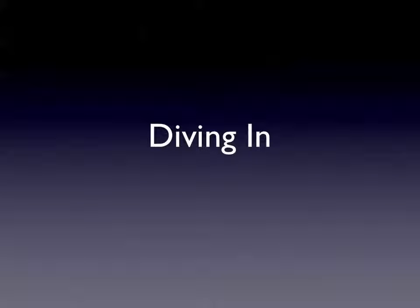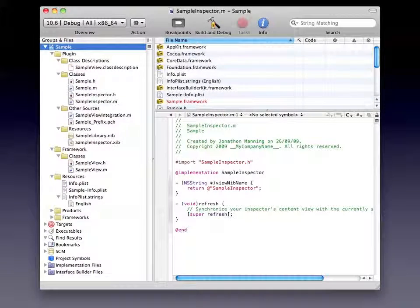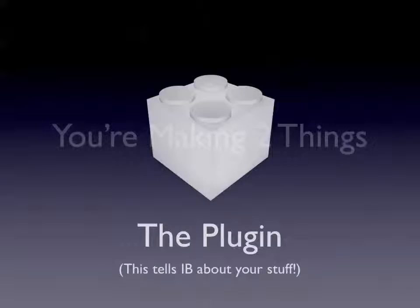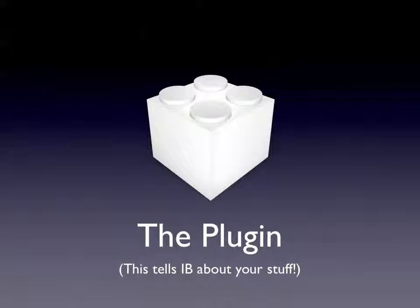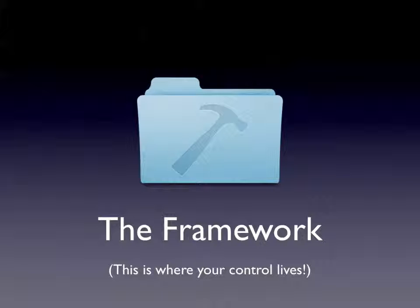With that in mind, let's dive in. When you're making an Interface Builder plugin, the first thing you do is set up your basic project. Xcode comes with the template. You're really making two things when you're making an Interface Builder plugin. You're making the plugin itself, which is responsible for telling Interface Builder about your controls, your code, how it looks, how it's meant to be presented, and other stuff like text, description, and labels. But there's also the framework where the actual control lives. So the idea behind your code and the stuff that IB cares about are really separated out.